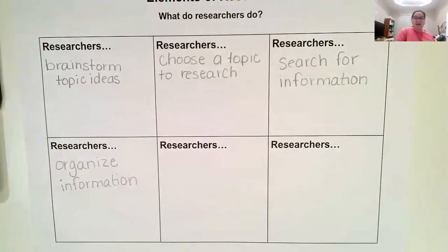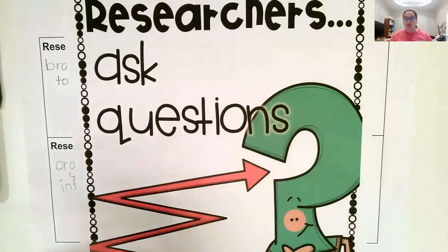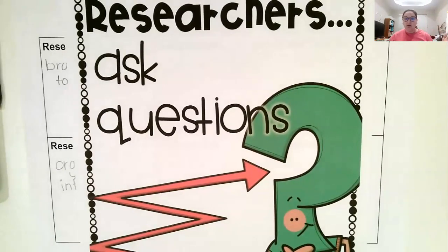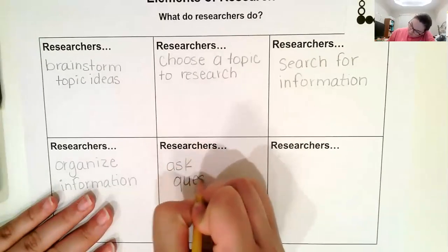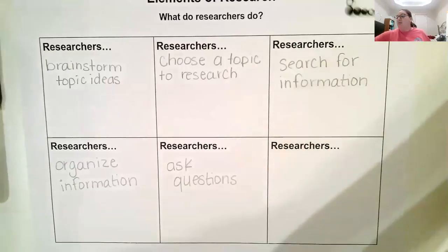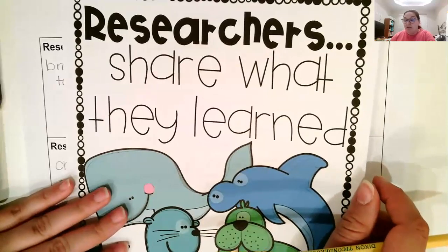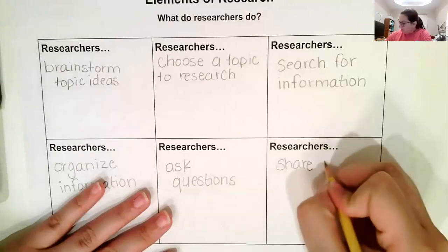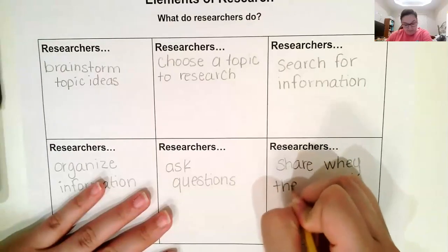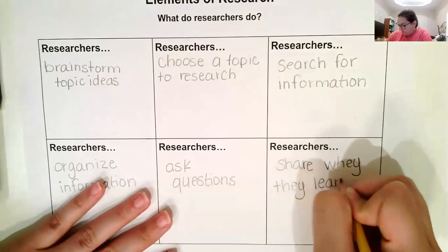After we organize our information, we're going to ask questions. Researchers ask questions: Do I have all the information? Is there anything missing? Should I go and research more? We're going to ask questions about what we found and how we organized it. And then the last thing researchers do is we share what we learned — we take what we have and we're sharing it. So in our last box: 'share what they learned.'